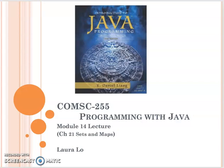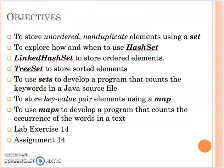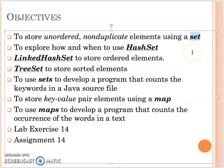In module 14, we will move forward to chapter 21. We will talk about sets and maps from the Java collection. We continue to introduce more data structures from Java under the Java collection. This week we will focus on set. We have different kinds of sets: hash set, linked list hash set, and tree set. Then we will also talk about maps.